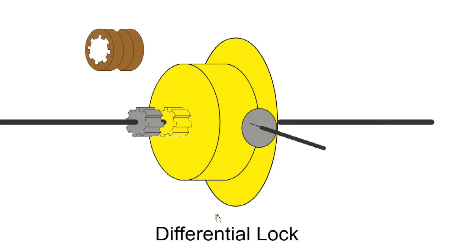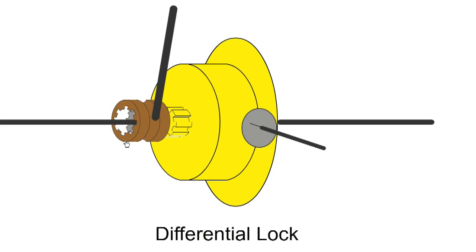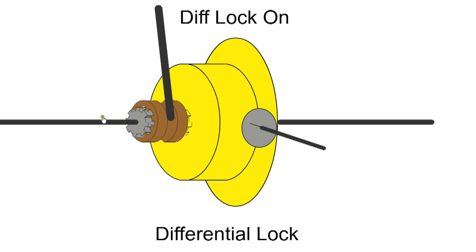One solution is a differential lock. We have a spline on the half shaft and a spline attached to the cage. When a collar is fitted over them, they are joined together and the half shaft rotates with the cage. It is only necessary to lock one half shaft as this prevents the differential action.